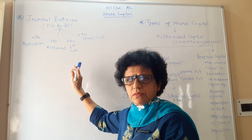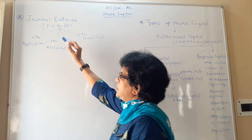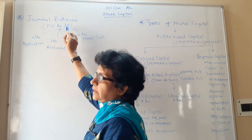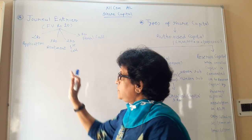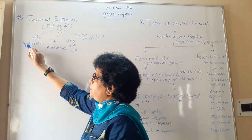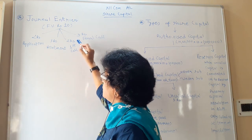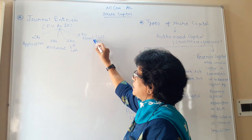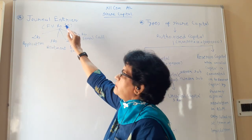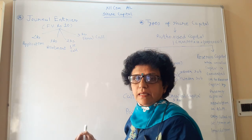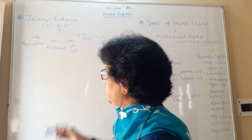Let us see with a simple illustration the basic journal entries for recording share capital. Suppose the face value of the share is 10 rupees, and the company asks for it in parts: 2 rupees at time of application, 3 rupees at time of allotment, 2 rupees as first call, and 3 rupees as final call. Total: 2 + 3 + 2 + 3 = 10 rupees. Now let us see how the share capital is created and how the entry is recorded.